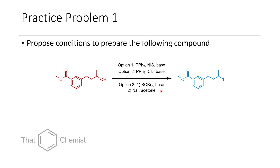An alternative option would be a multi-step approach: first use thionyl bromide to convert this alcohol into an alkyl bromide, then treat that alkyl bromide with sodium iodide. I wanted to put in an example demonstrating that this approach also works on secondary alcohols most of the time. This approach would not work for tertiary iodides or bromides, which we'll cover when we get more into SN1 reactions.